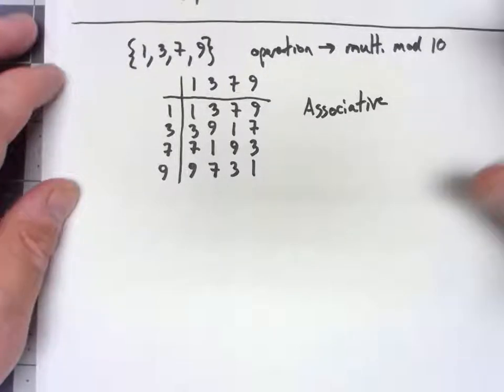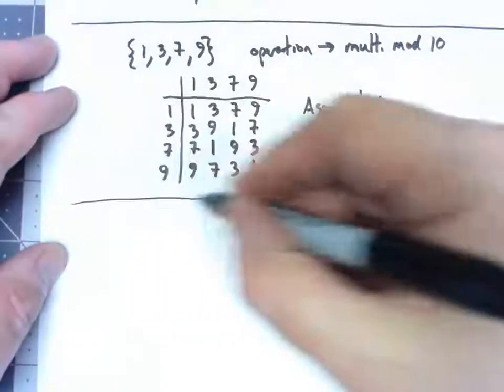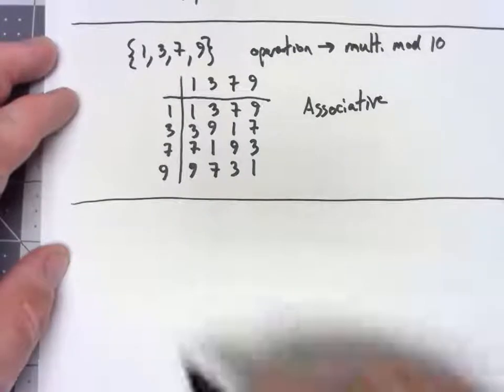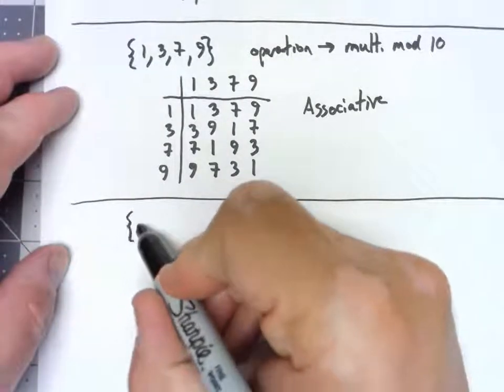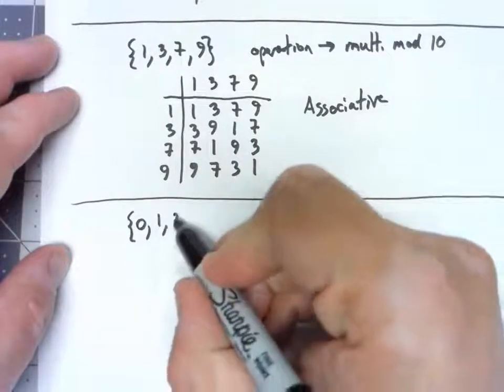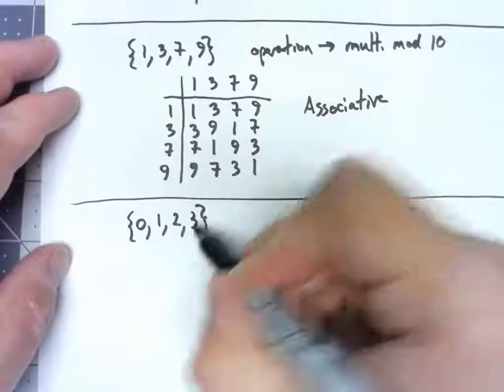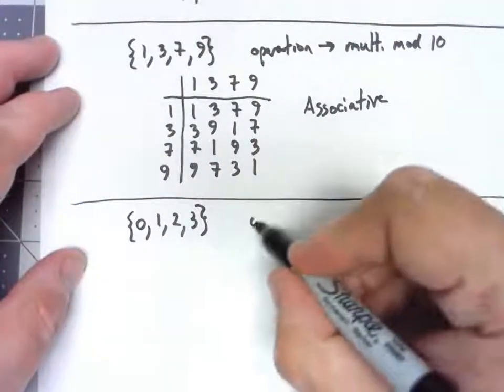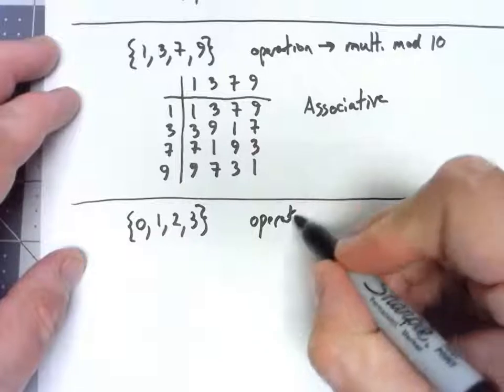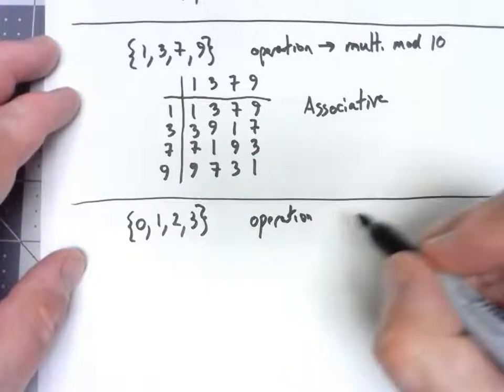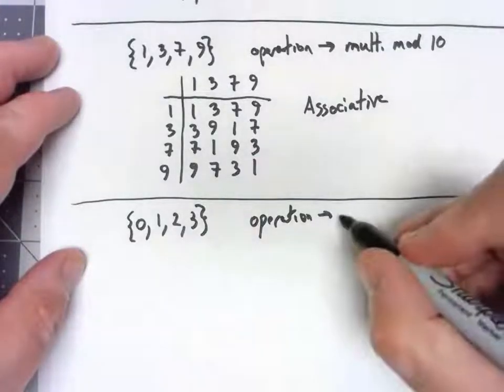But now let's take a look at a similar thing that's not a group. Let's look at the set 0, 1, 2, 3, and look at the operation being multiplication mod 4.